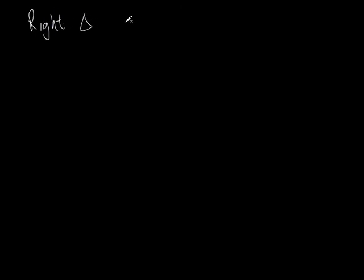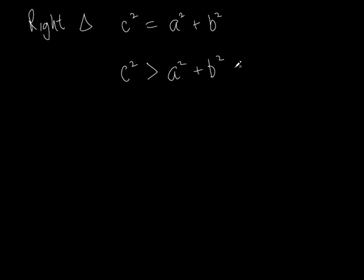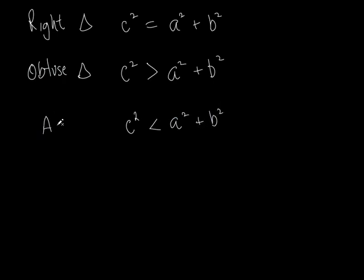If it's a right triangle, C squared equals A squared plus B squared. But if you're given three sides and C squared comes out bigger than A squared plus B squared, then it's an obtuse triangle. And if C squared is less than A squared plus B squared, then it's an acute triangle.